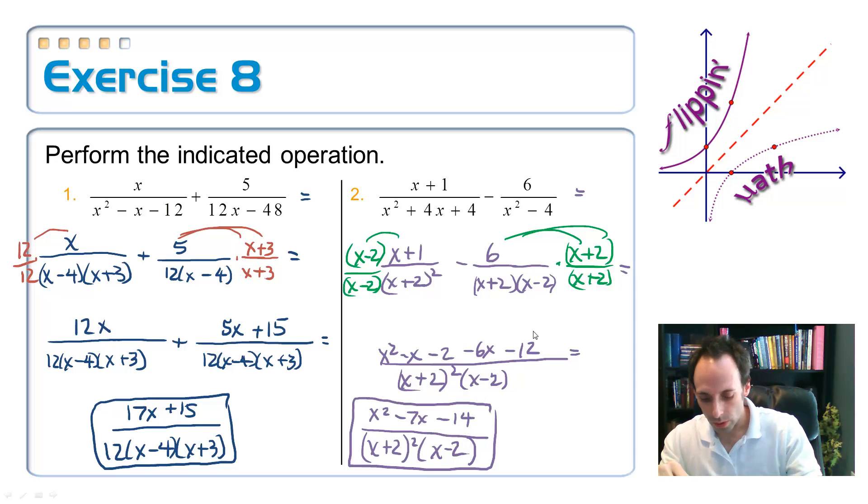So there you go. There's adding and subtracting rational expressions. Just like adding and subtracting fractions you got to get a common denominator. The best way to get a common denominator is look for the least common multiple. You want to factor both of the denominators and then find the highest power of each one of those factors and multiply them together. All right, so stay tuned for objective two on complex fractions.